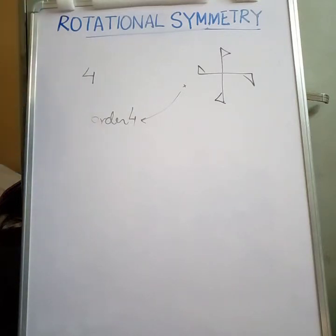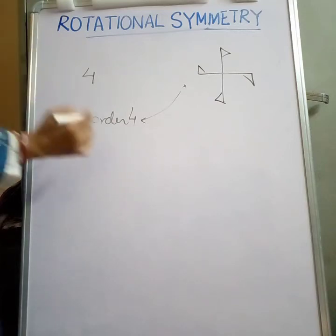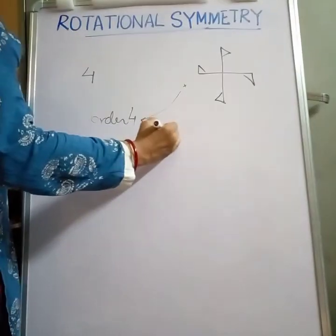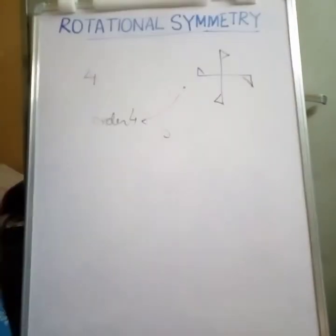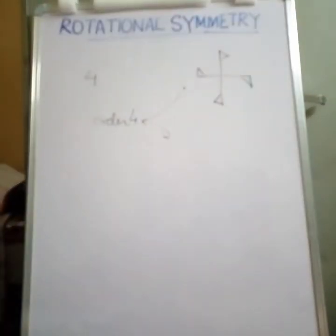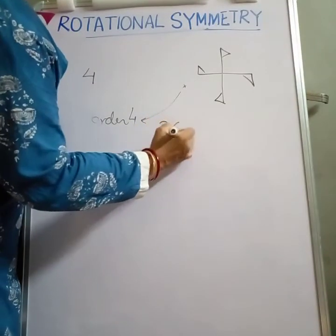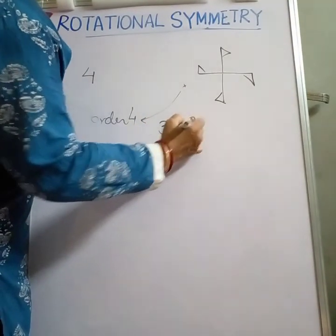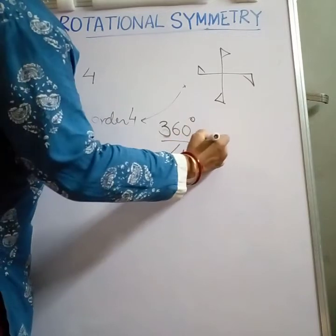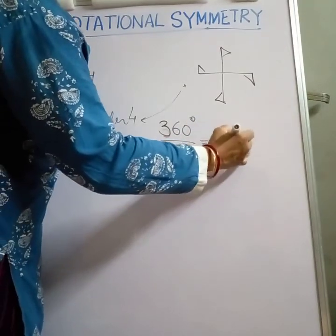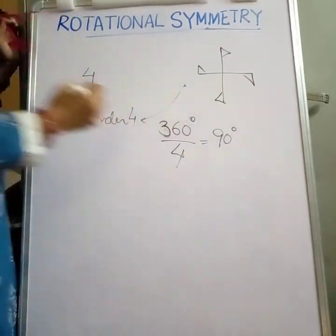The angle of rotational symmetry is 360 degrees divided by 4, which equals 90 degrees.